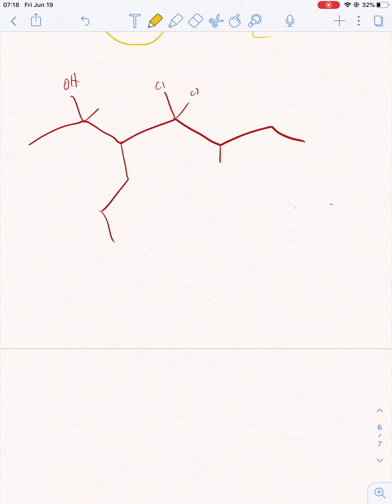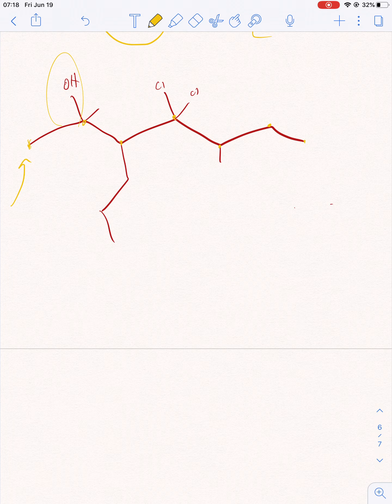And we're gonna start over here because of this OH. So methyl, ethyl, propyl, butyl, pentyl, hexa, hexa, hepta. So it's gonna be hepta - it's gonna be heptanol, right, because of this OH. So it'll be two to dichloro.